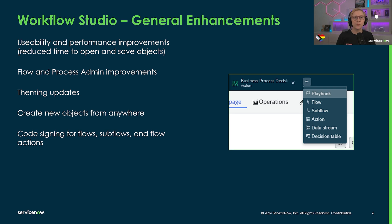Before we head into specific features for flows, playbooks, and decision tables, we'll go through some general enhancements. We're continually working on improving builder and execution performance, and in this release we've made changes to reduce the time to open and save workflow objects in Workflow Studio. Also new in Xanadu: additional control over read access to flow execution details with new read-only role options. In addition to the platform security offering code signing, you can now sign and validate any flow, subflow, or action.